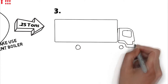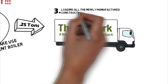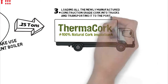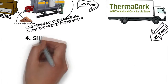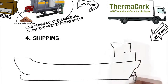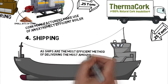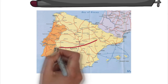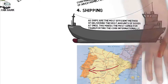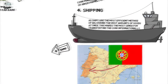The next step is loading all the newly manufactured construction-grade cork into trucks and transporting it to the port — another 0.25 tons. The next step is shipping. As large ships are the most efficient method of delivering the most goods at once, this makes the most sense for transporting cork internationally. A vast majority of the world's cork comes from southwestern Europe, primarily Portugal. We'll count that as four tons of carbon generated.